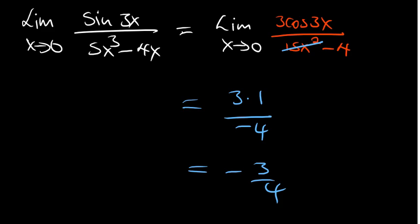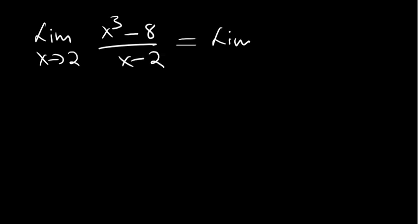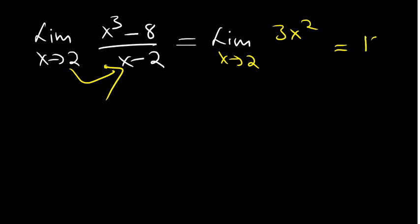Here is one more example which also requires a lot of work otherwise — long division. Applying L'Hôpital's Rule, we differentiate the top to get 3X², and the denominator differentiates to 1. Substituting X = 2: 3(2²) = 12, which matches the answer from the other method.